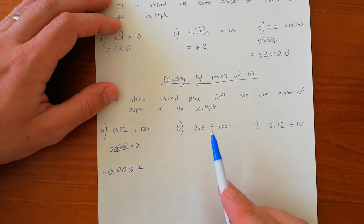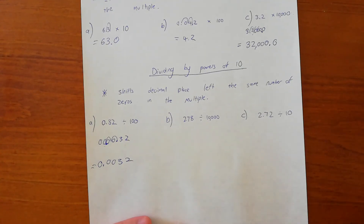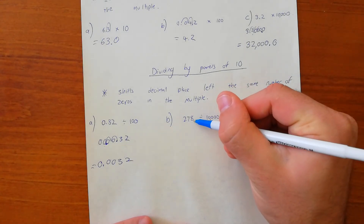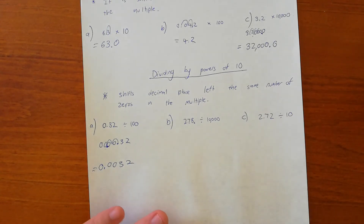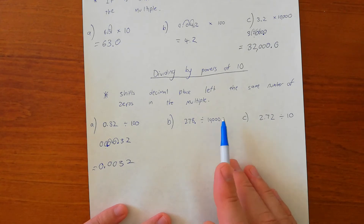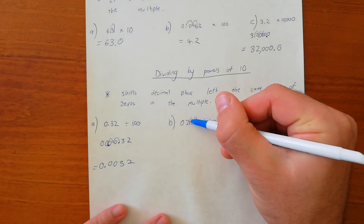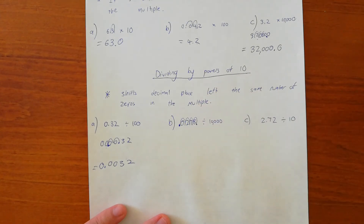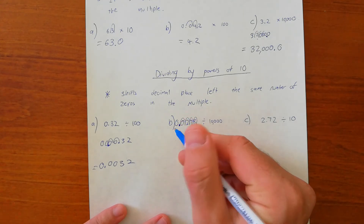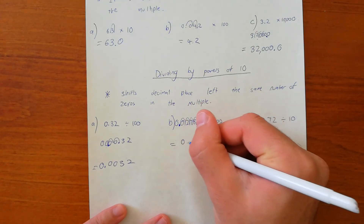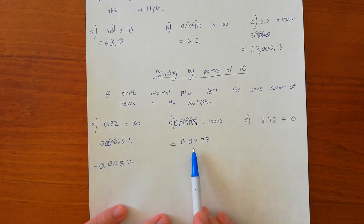If we look at b, we've got 278 divided by 10,000. Now where's the decimal place for 278? Well, all whole numbers have decimals — we can put a decimal there with a zero after it. We're shifting four places to the left — one, two, three, four — so we actually need to add a zero. The decimal place is now here, and putting a zero in front for clarity, the answer is 0.0278. So 278 divided by 10,000 equals 0.0278.